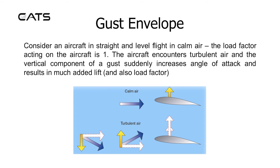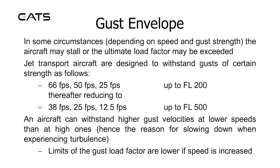The gust envelope. Consider an aircraft in straight and level flight in calm air — the load factor acting on it is 1. When the aircraft encounters turbulent air, the vertical component of a gust suddenly increases angle of attack, resulting in much added lift and also increased load factor. In some circumstances, depending on speed and gust strength, the aircraft may stall or the ultimate load factor may be exceeded.